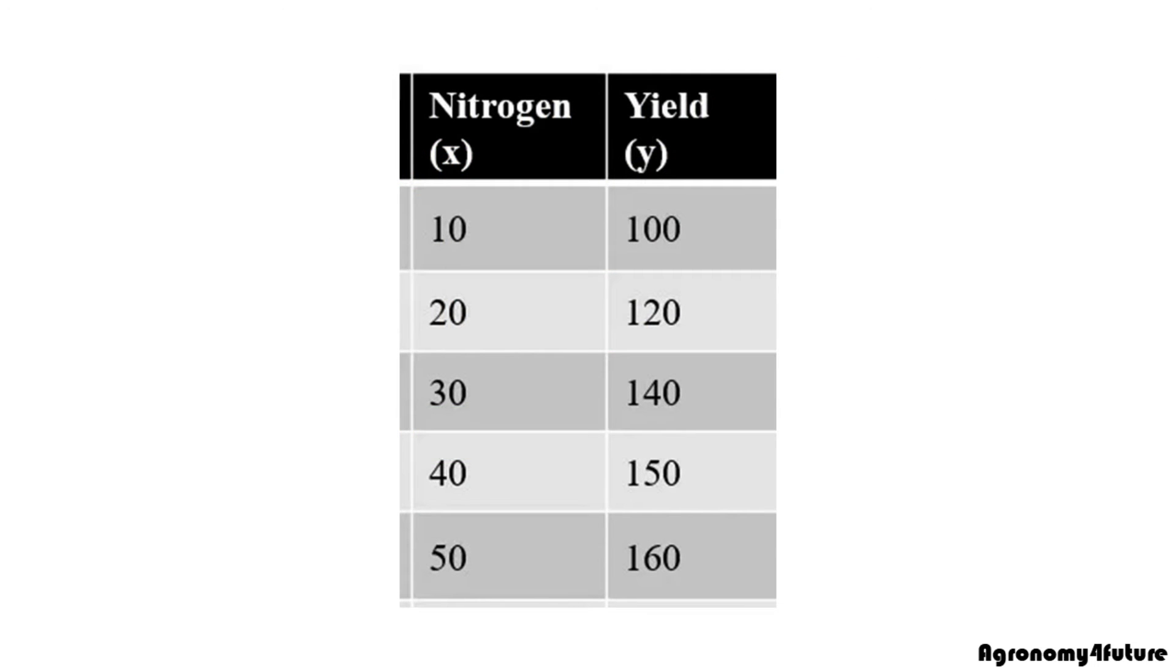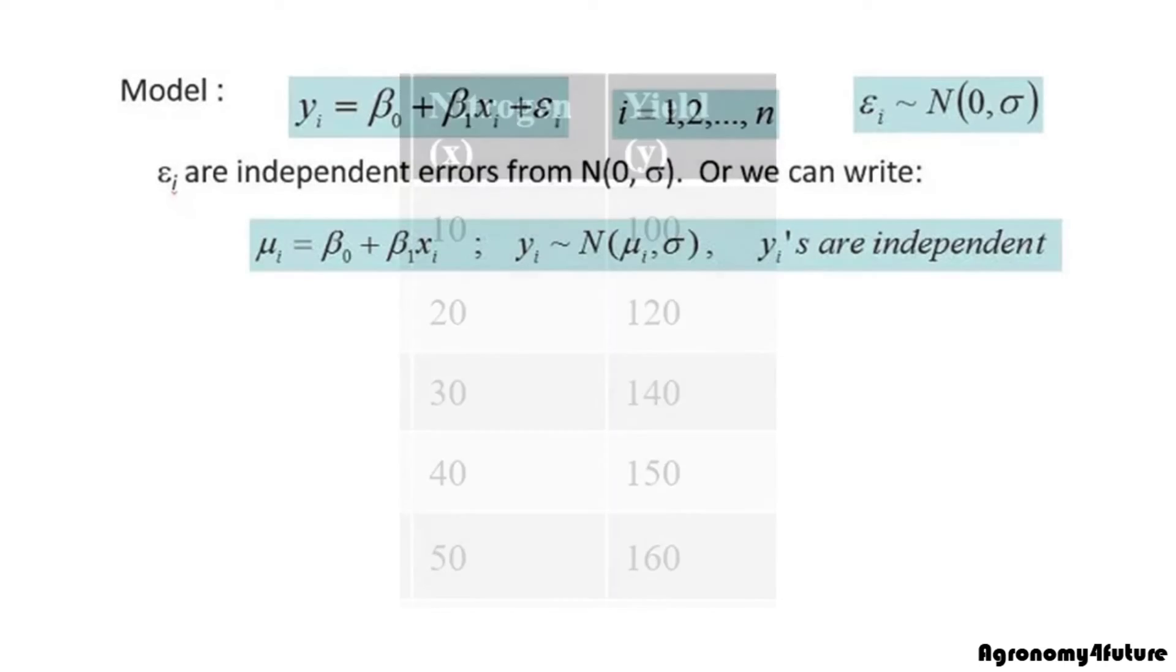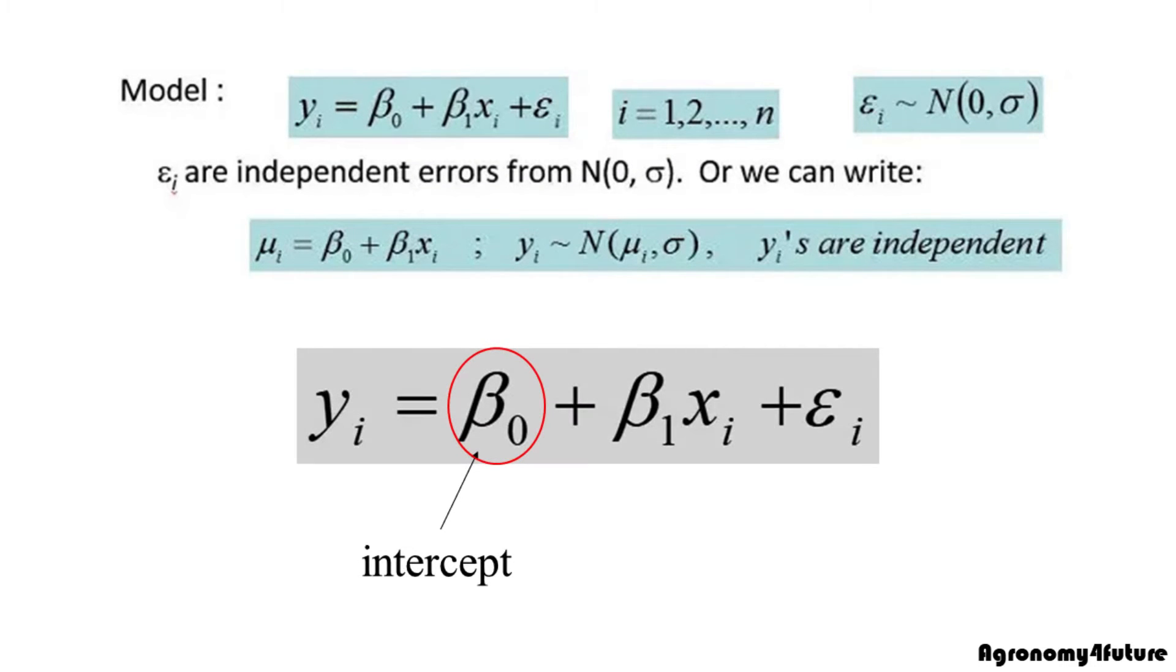Let's go back to the data. According to amount of nitrogen fertilizer, I investigate how yield is changed. This is the simple linear regression model. Beta 0 is intercept when x is 0. Beta 1 is slope. And epsilon is error, also called residual. Today I'll explain how to calculate intercept and slope of simple linear regression model.